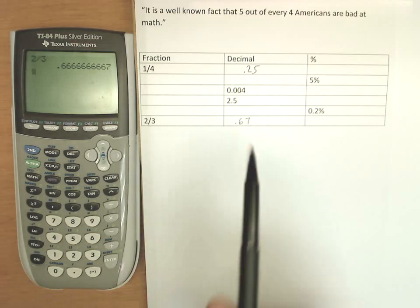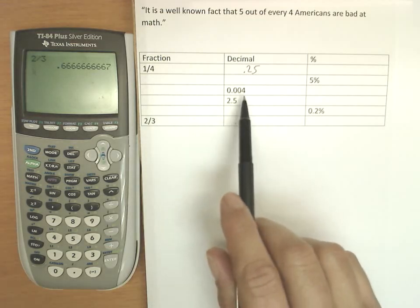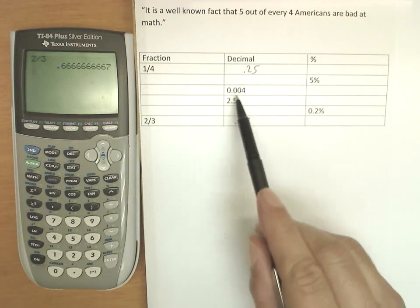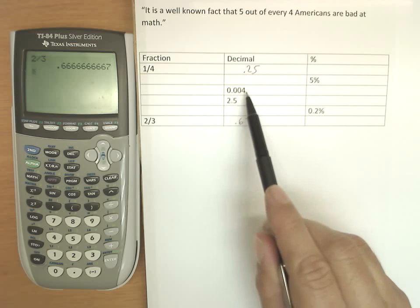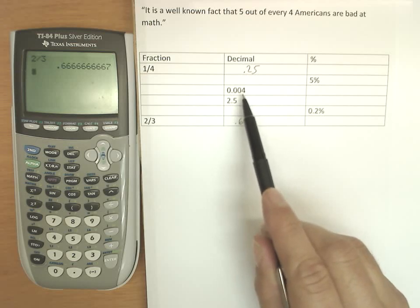Okay, so now let's go backwards from decimals to fractions. 0.004, for example. This is the 10th place, 100th place, 1,000th place, so it's 4 over 1,000, which we could then reduce.